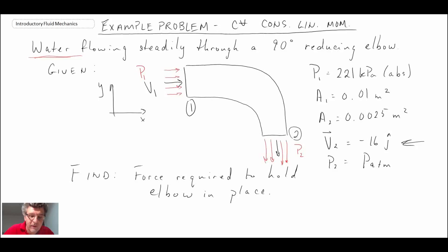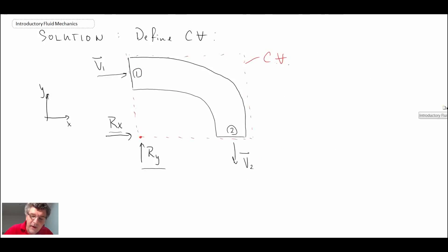Now that we're equipped with V1, we can apply the conservation of linear momentum, the control volume formulation of it, to this elbow. Looking at our free body diagram, we're trying to determine the reaction forces - we want Rx and Ry. We'll start with the x component and then move to the y component.